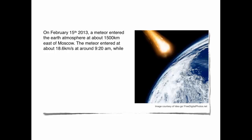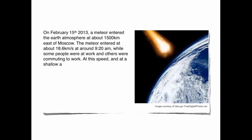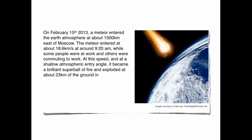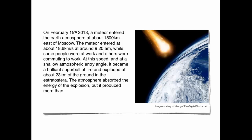On February 15, 2013, a meteor entered the Earth's atmosphere at about 1,500 km east of Moscow. The meteor entered at about 18.6 km per second at around 9:20 am, while some people were at work and others were commuting to work. At this speed and at a shallow atmospheric entry angle, it became a brilliant super ball of fire and exploded at about 23 km above the ground in the stratosphere. The atmosphere absorbed the energy of the explosion, but it produced more than 20 times the energy of the Hiroshima atomic bomb, and many residues reached the ground.